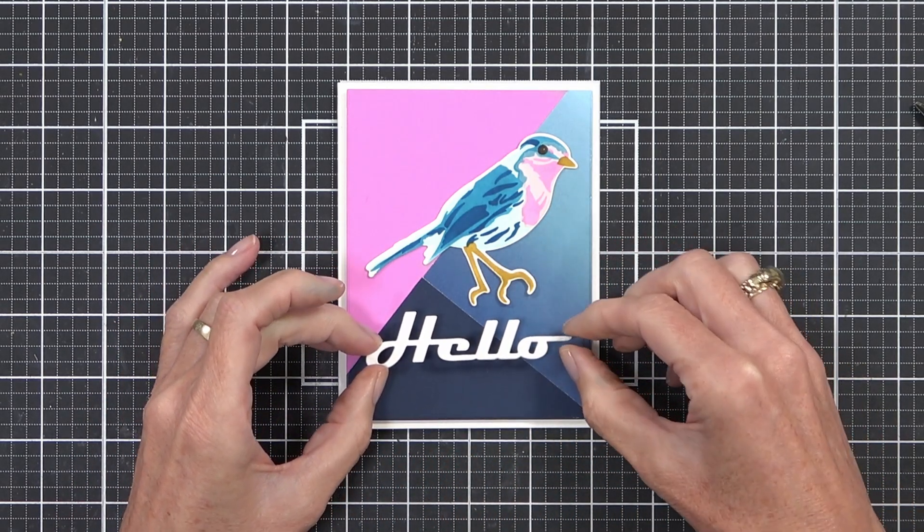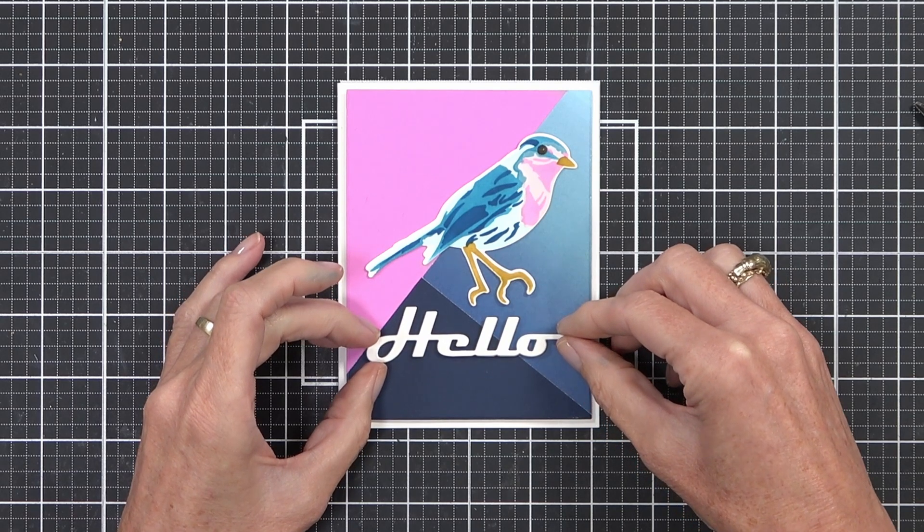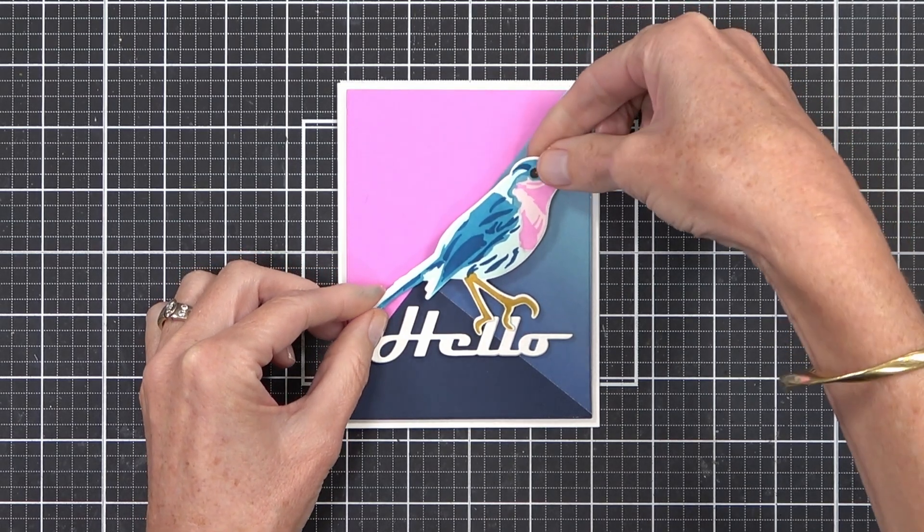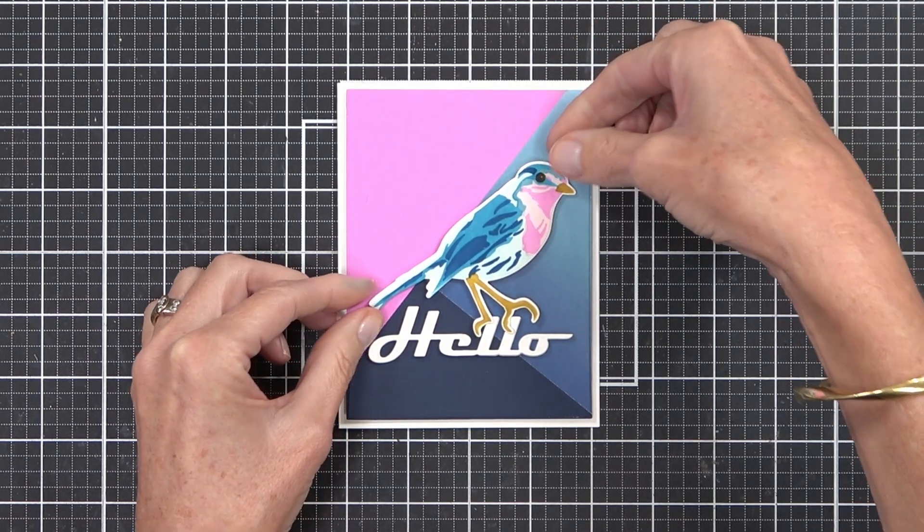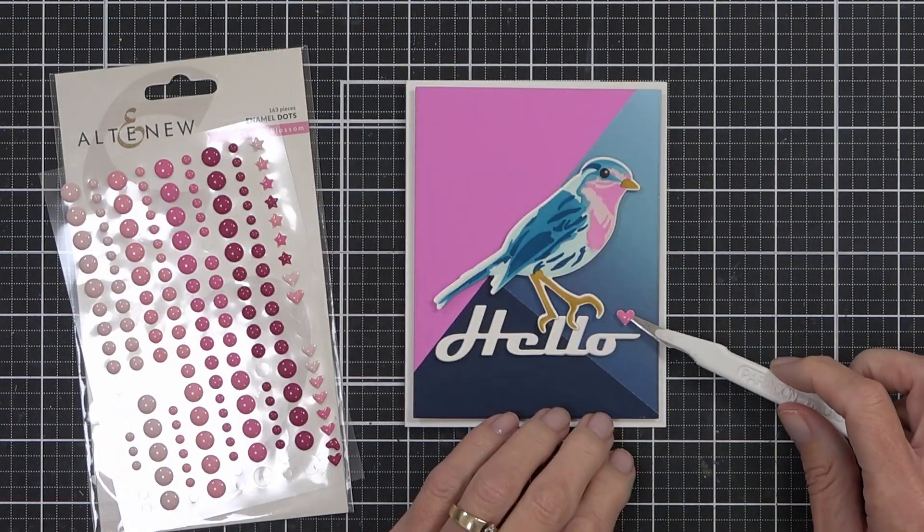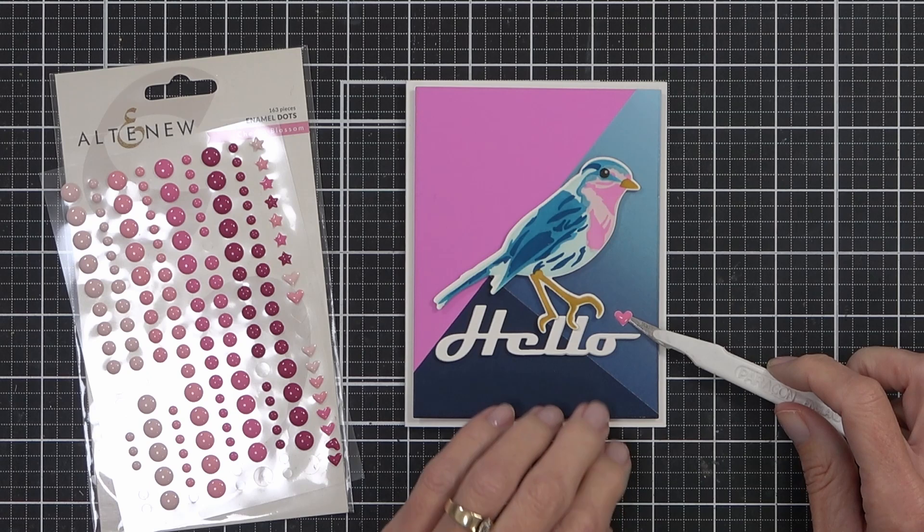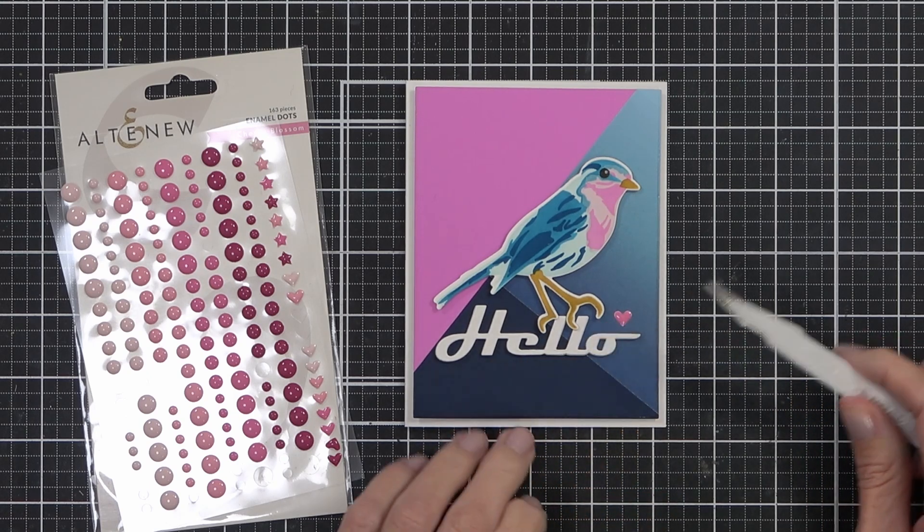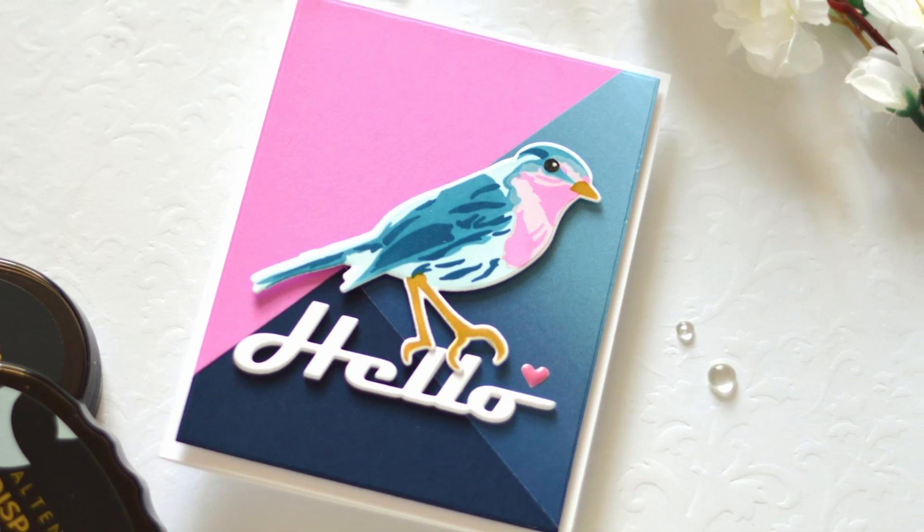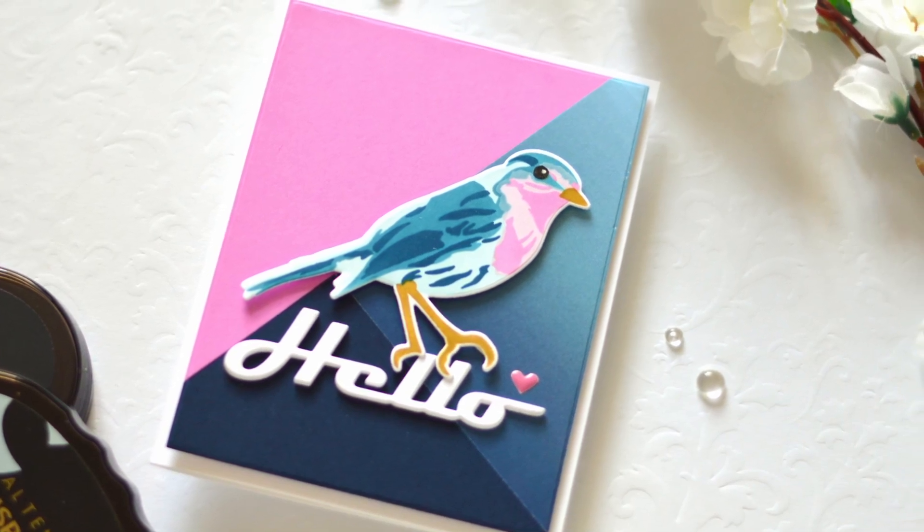I also added a couple of enamel dot hearts which were from the Cherry Blossom enamel dot set. I wish Altenew would just make all the colors in the hearts and just put out a whole heart enamel dot set. If we all ask them all at once I reckon they might do it for us. What do you reckon?